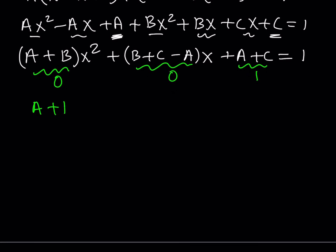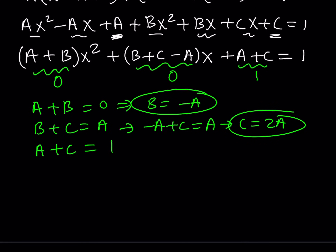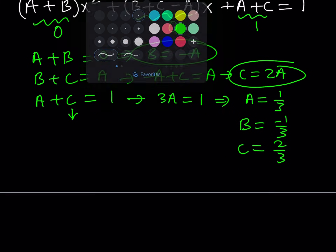a plus b equals 0, b plus c equals a, and a plus c equals 1. From the first equation, b equals negative a. Replacing b with negative a gives negative a plus c equals a, so c equals 2a. Substituting into a plus c equals 1 gives 3a equals 1, so a equals 1/3. Then b is negative 1/3, and c is 2/3. These are our coefficients.